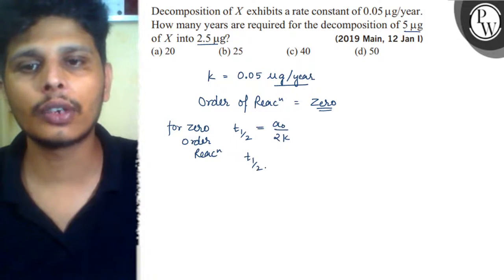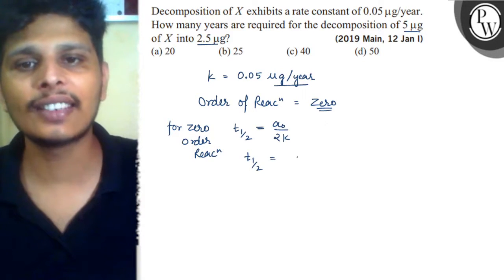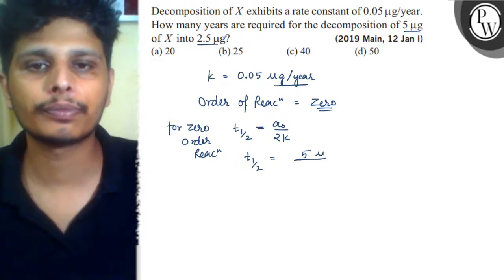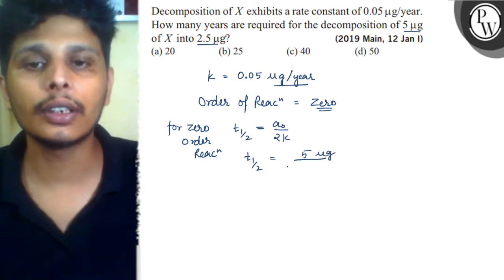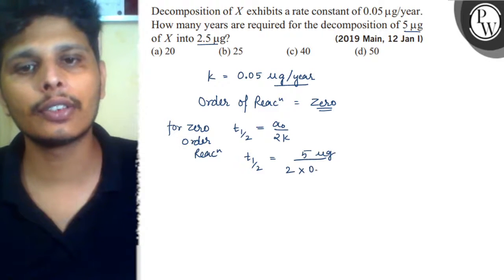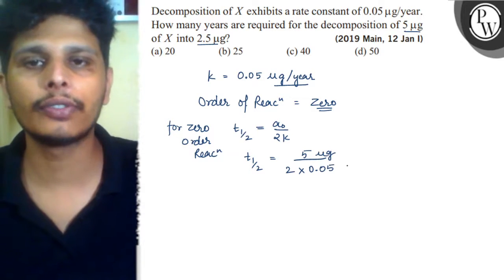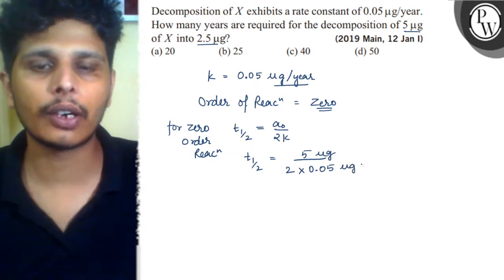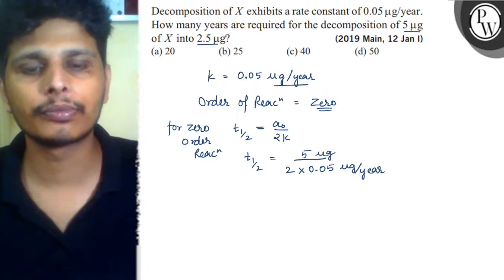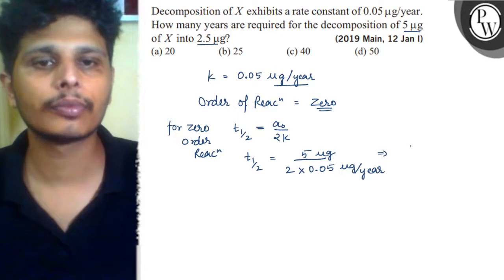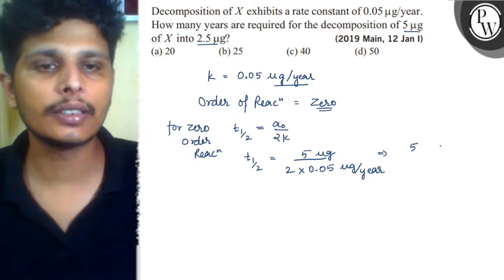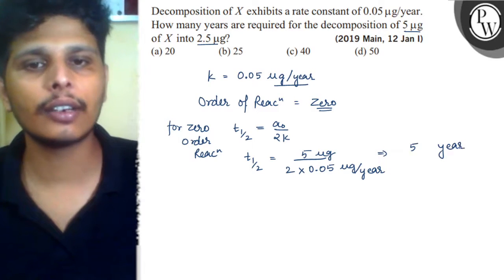In case the rate constant, t half is equal to initial concentration is 5 microgram and rate constant 2 into rate constant 0.05 microgram per year. This will be cancelled out as microgram and the answer will be in t half is year.